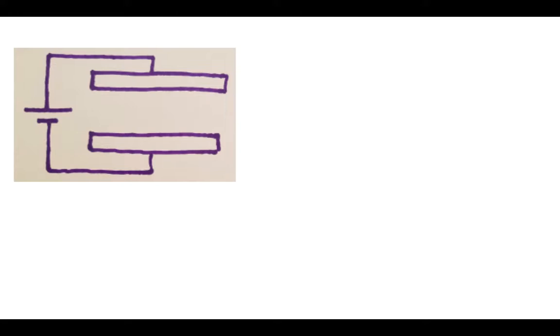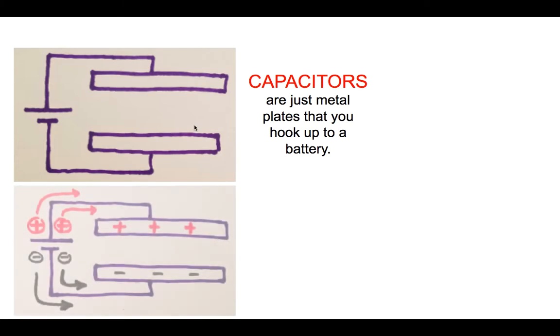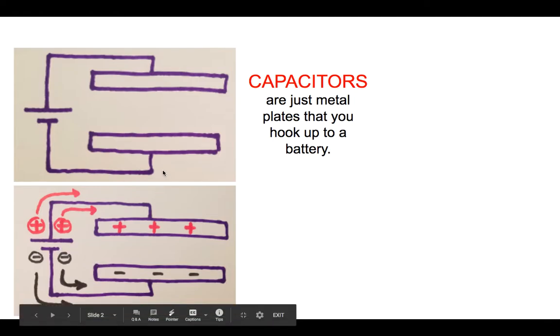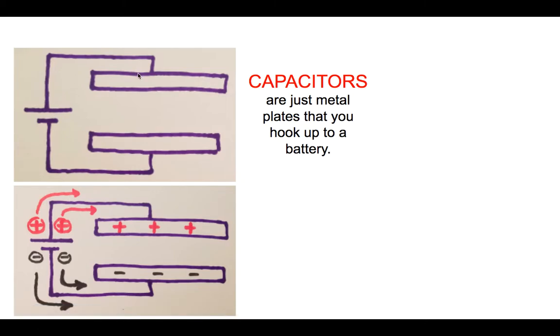All right, this is a little introduction to capacitors. Capacitors really are just metal plates that you hook up to a battery. Here's a battery on the left. When you hook it up, charge will flow. Electrons from the negative terminal don't want to be near each other, so they run over to the plates. Likewise, positive charge leaves the positive terminal and goes to the plates. What really happens is the battery sucks electrons from the plate, leaving it positively charged. You end up with plates that are filled up with charge.